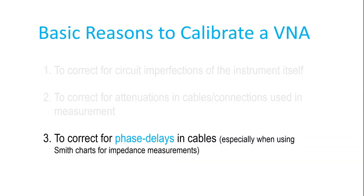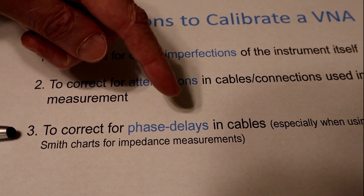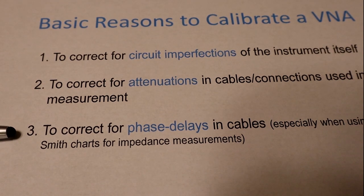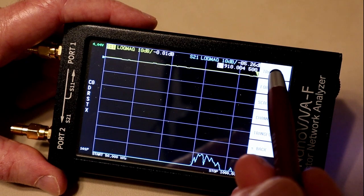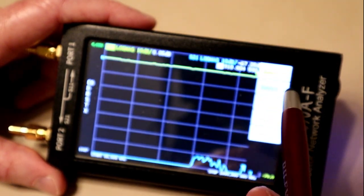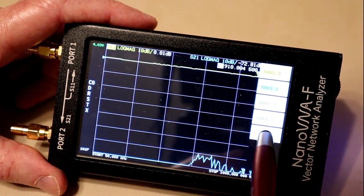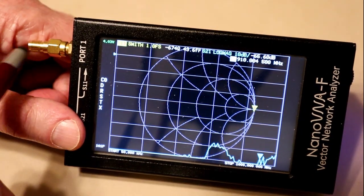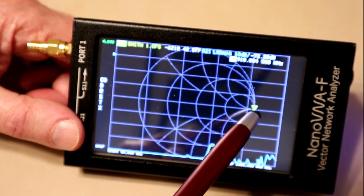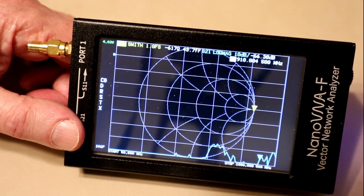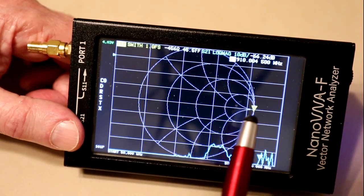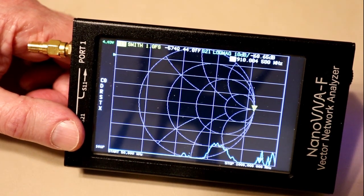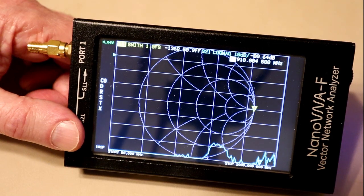And the third basic reason to calibrate a VNA has to do with when you're making impedance measurements. We get phase delays along the coax cables, and we need to calibrate those out if we're going to be able to read the impedance properly on a Smith chart. So to illustrate this, I'm going to go to the trace menu and make sure I'm pointing to trace 1, so I tap it twice. I'll hit back and then go to format and change it to a Smith chart. So as it should be for an open-circuited port 1, the readout is over here on the right-hand side of the Smith chart, which is an open circuit.